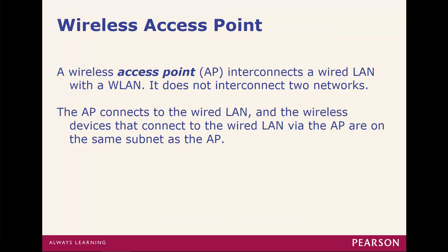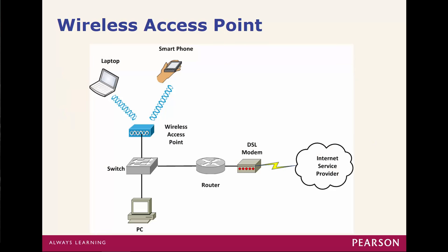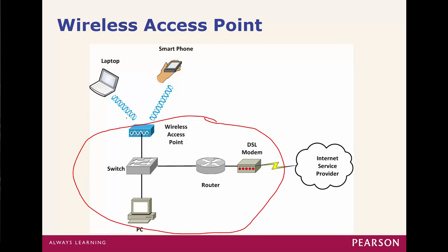In our wireless router we have what's called an access point, or AP. This access point interconnects our wired LAN to our wireless LAN — it does not interconnect two networks, it just connects a wired LAN with a wireless LAN. The AP connects to a wired LAN, and then all of the wireless devices gain access to the wired LAN through that wireless connection.